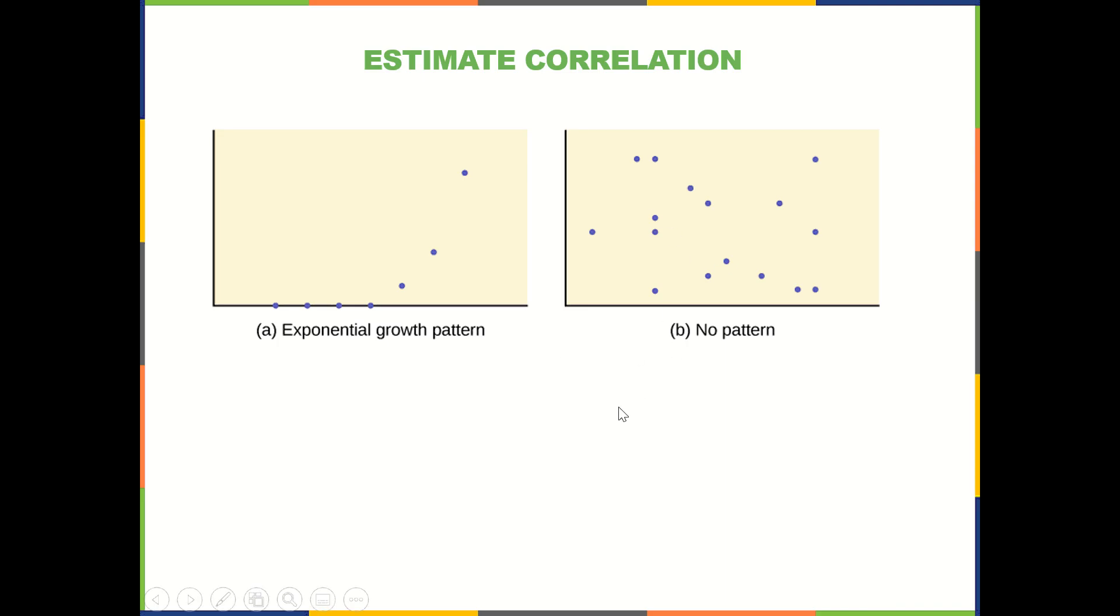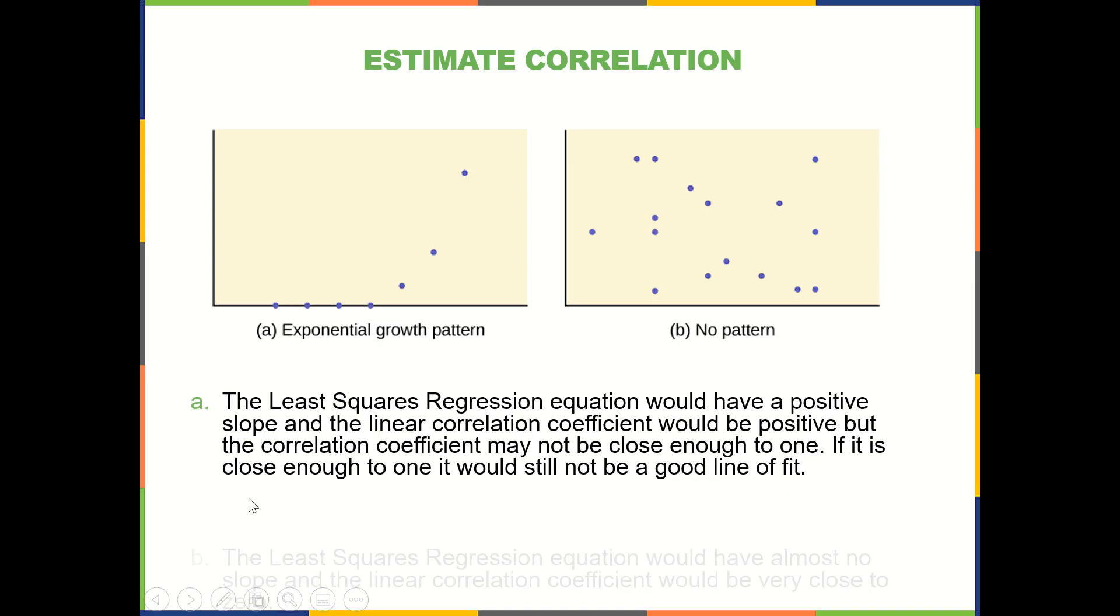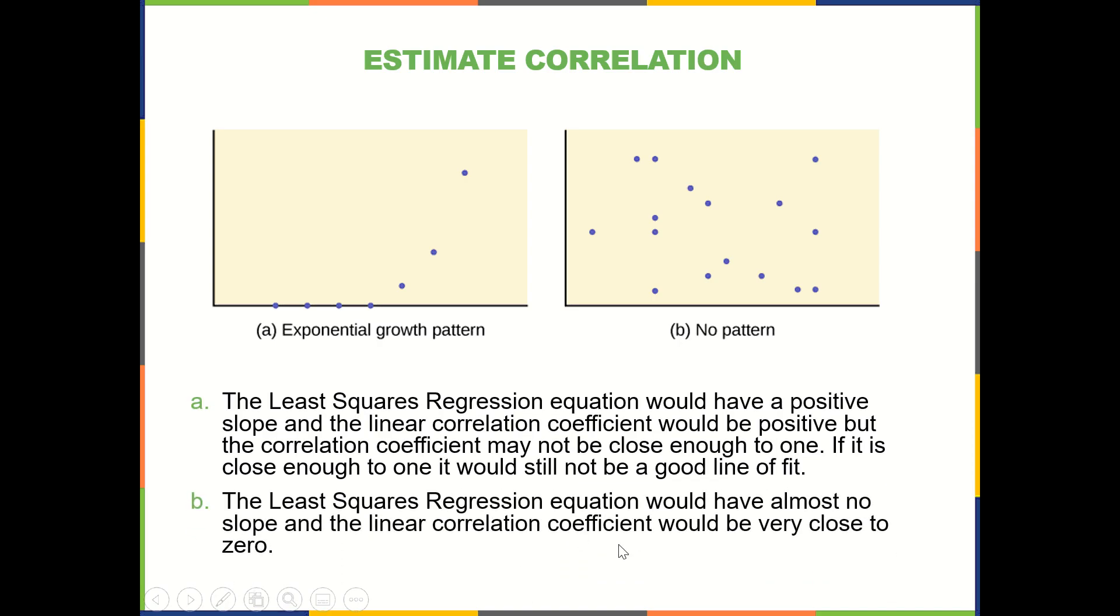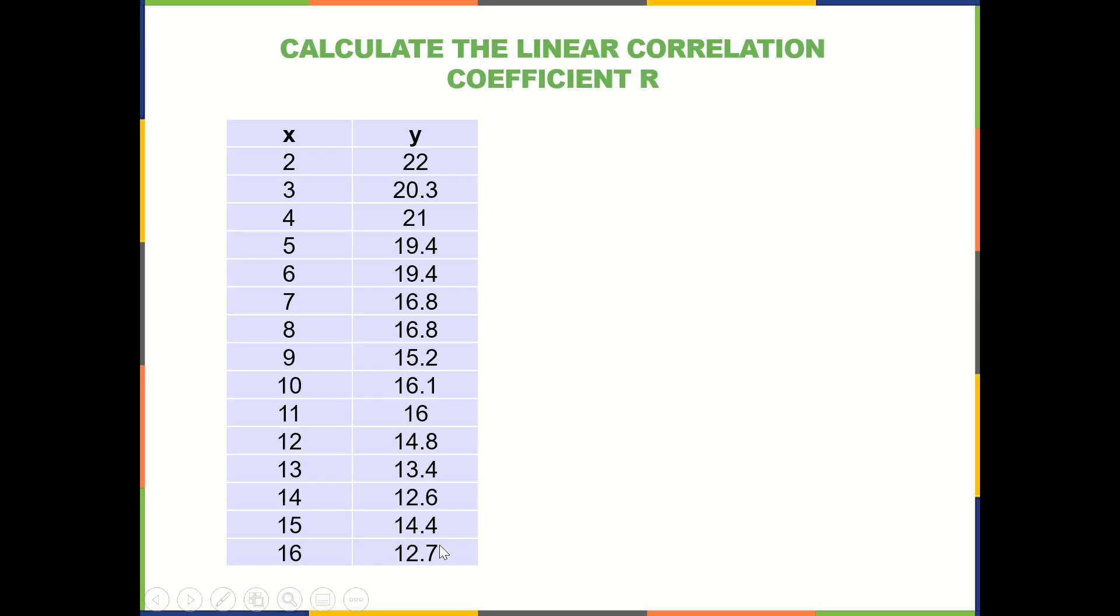And then here you see there's no pattern. So for the second one you would have a slope of zero.